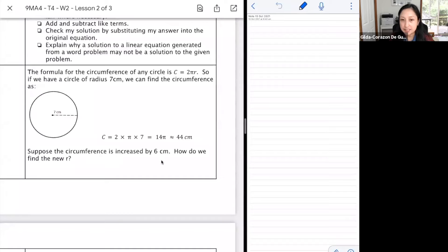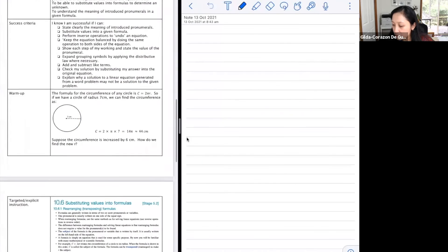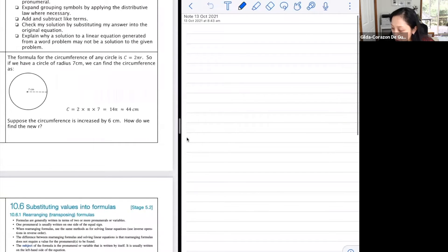Suppose that the circumference is increased by 6, how do we find the new r? Remember that π is a constant, so there would be a relationship between your circumference and your radius. So what we've done here is that since the radius is 7, we were able to figure out what the circumference is. It's 44, but this time, what we are asked is from 44 centimeters of a circumference, it's increased by 6, so now it's 50, because 44 plus 6 is 50 centimeters. What we're asked now is what's our radius? That's the question.